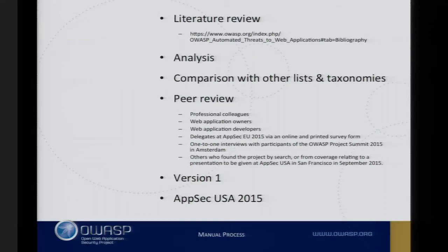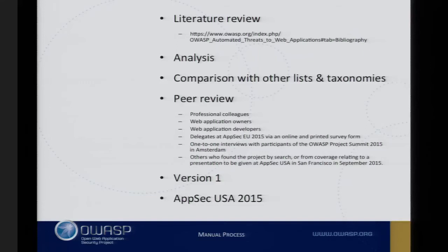I started at the end of January, beginning of February this year, and identified and read or skim-read 150 sources of information. They're all listed on the project's wiki page on the OWASP website. There were blog posts, news, vendor reports, breach reports, academic papers, white papers, technical papers — all that type of stuff. From that I got about 600 data points that I was interested in, not all automated threats but in the area of interest. I posted periodic updates to the project's mailing list.